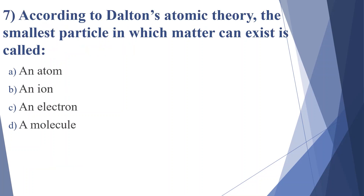Seventh question: according to Dalton's atomic theory, the smallest particle in which matter can exist is called — option A: an atom, option B: an ion, option C: an electron, option D: a molecule. Answer is option A, an atom.